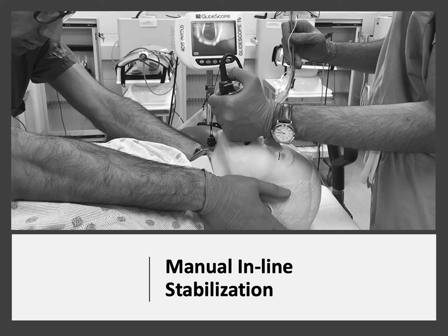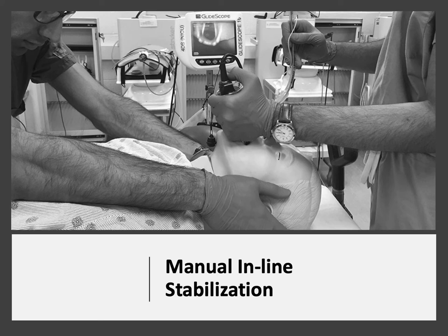In older publications there is reference to applying traction during C-spine precautions. However, this is now thought to compromise the spine, especially in the presence of ligamentous injuries, and current recommendations only advocate for inline immobilization. It's also important to note that manual inline stabilization can impair the intubator's view of the cords and make tracheal intubation more difficult. Once the airway is secured, the cervical collar should be reapplied unless the patient is going for imminent surgery on their C-spine.